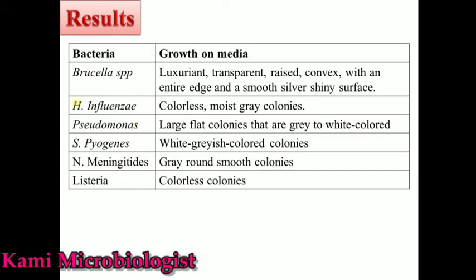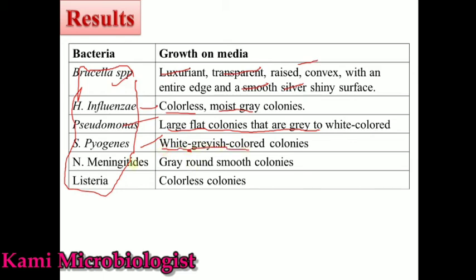Other bacteria not listed here have the same colonies already explained in previous video lectures on blood agar and chocolate agar. The most important colony characteristics on this media: Brucella shows luxuriant, transparent, raised convex colonies with entire edges, smooth and silver-shiny color. H. influenzae shows colorless, moist, gray colonies. Pseudomonas shows large, flat, gray to white colonies. Staphylococcus and Streptococcus pyogenes show white-gray colonies, and Neisseria meningitidis shows gray colonies.